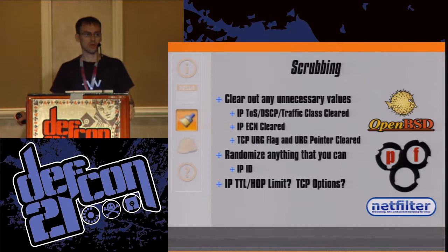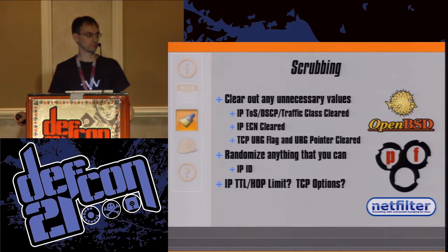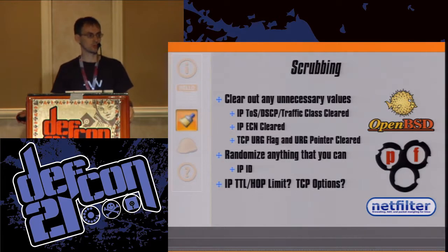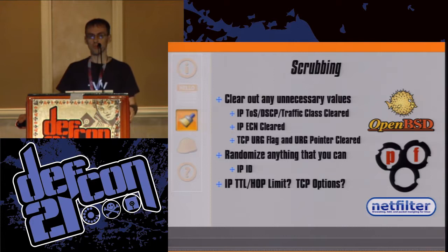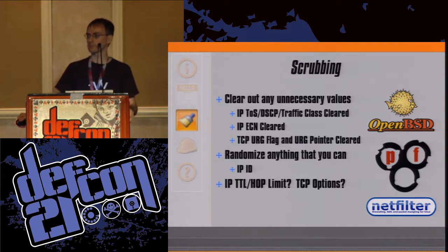The algorithm I developed to disrupt that pattern starts off with some scrubbing — the idea being to leave as little behind as possible for the fingerprint. Don't give them an inch. You clear necessary values: IP type of service, IP ECN, TCP URG flag and URG pointer. Clearing these also takes care of NMAP's reflection probes, where some unusual operating systems will mirror values back in responses and NMAP can identify them just by that.